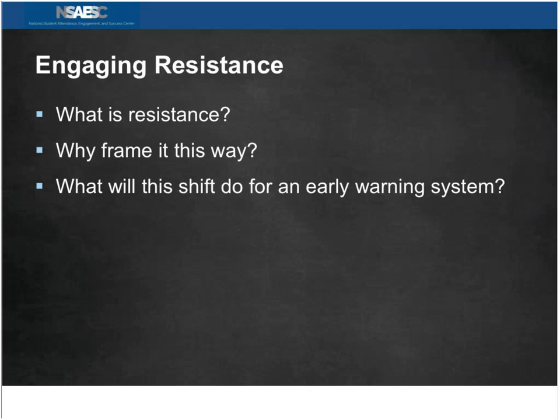This shift in an early warning system can help move our orientation away from trying to figure out what's wrong with a kid or a family, and instead think about how a student's behavior is a response to the way we are educating that child — the opportunities we're providing, the stressors, the learning environments, and the status differences we may be exacerbating through our policies and practices in schools.